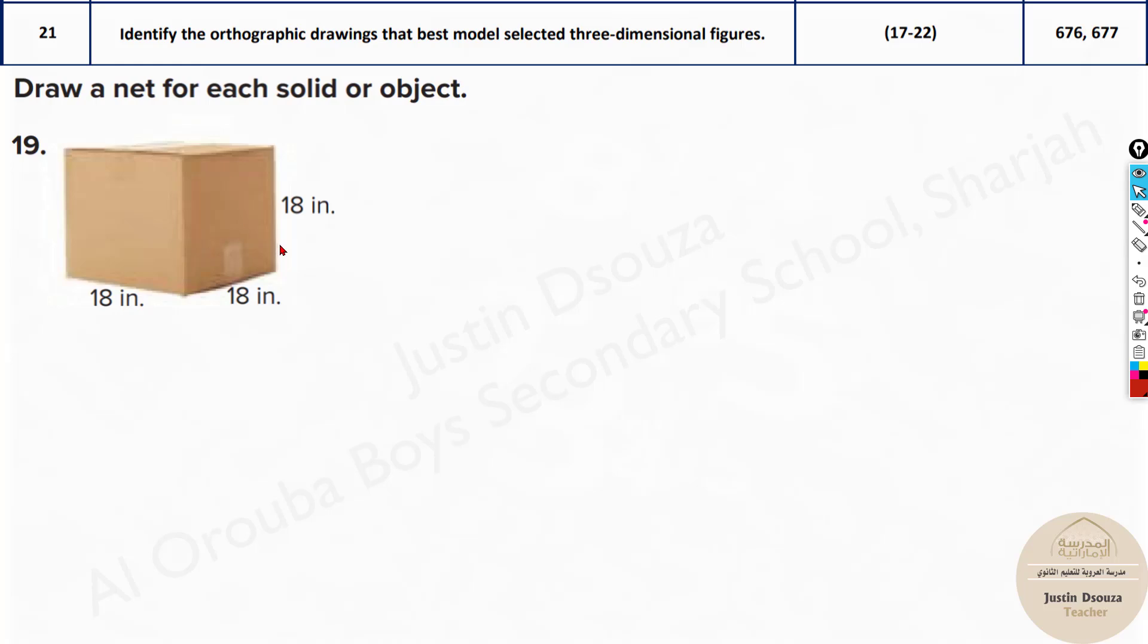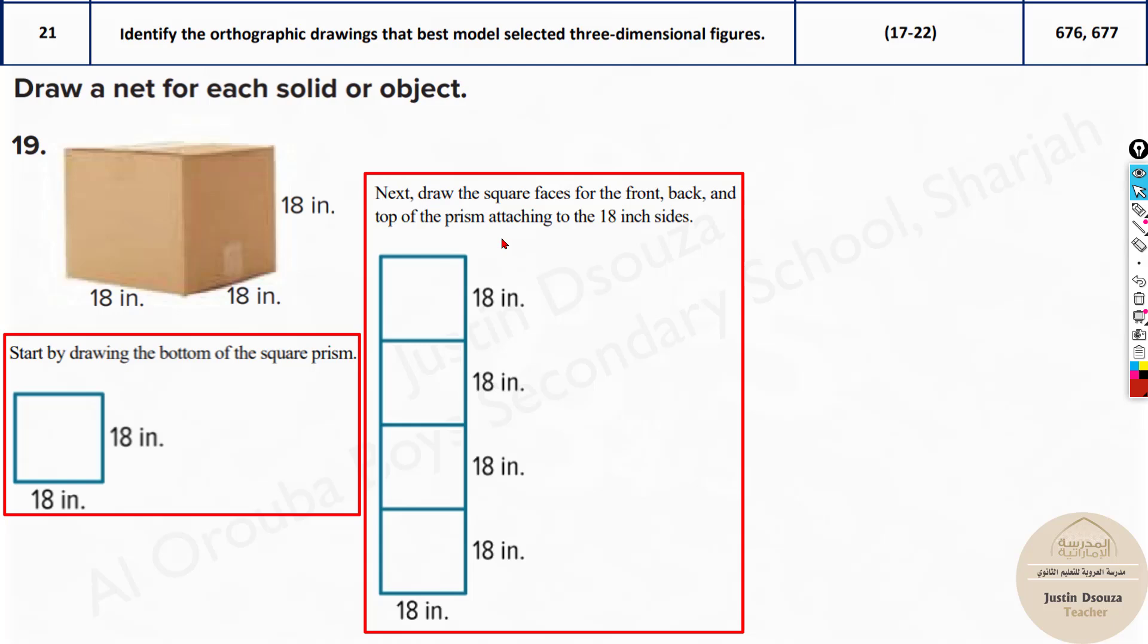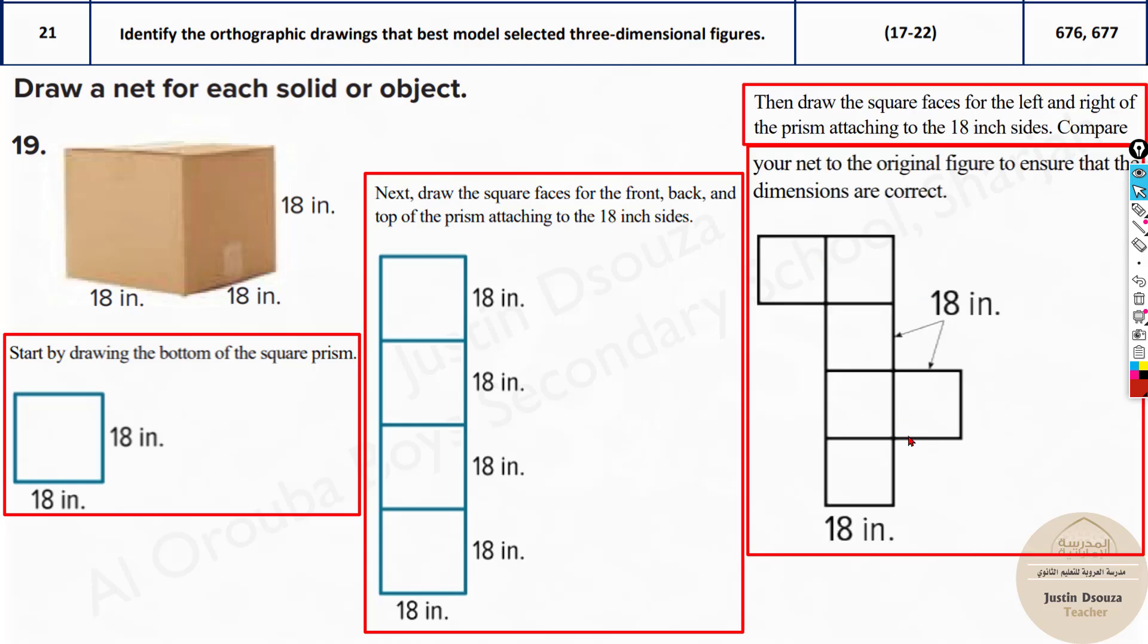This is a square prism. So we can easily do this up. Do the squares first and then the sides. And that's the answer.